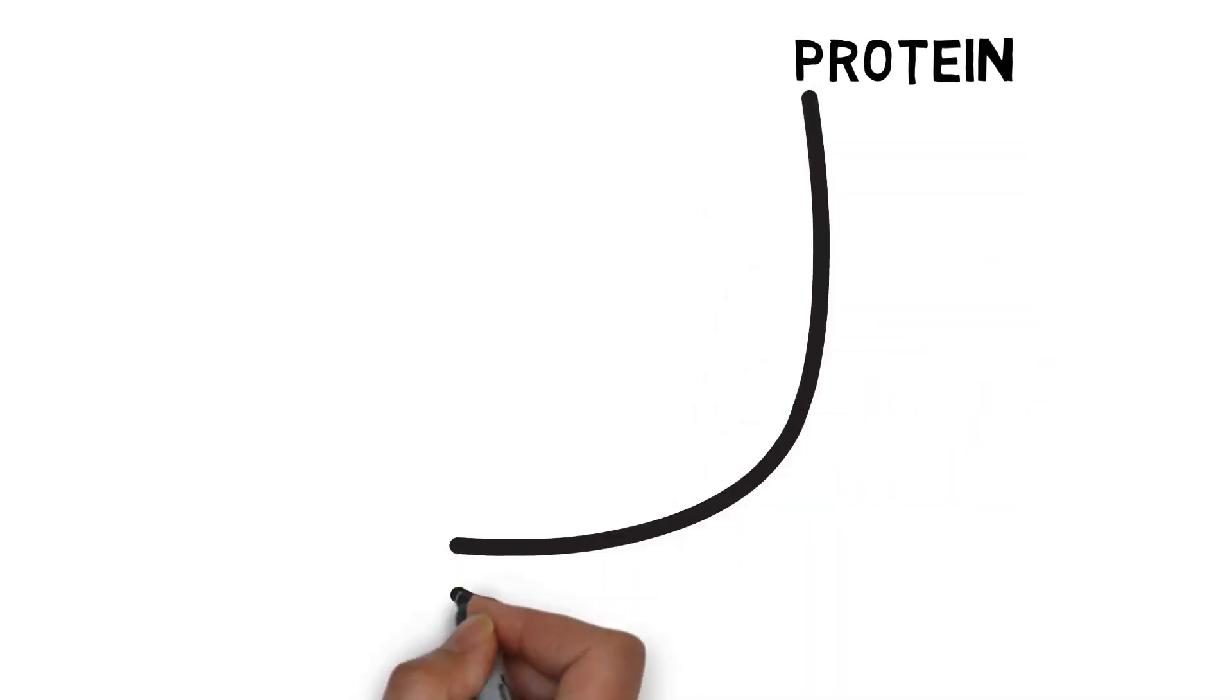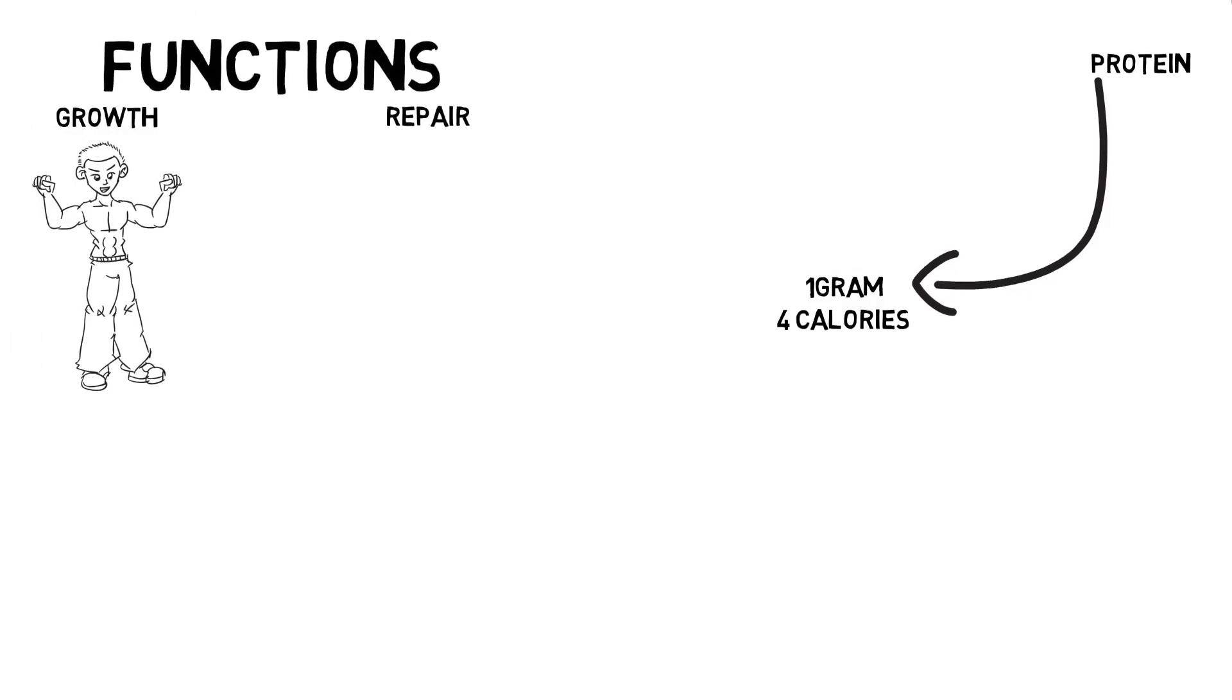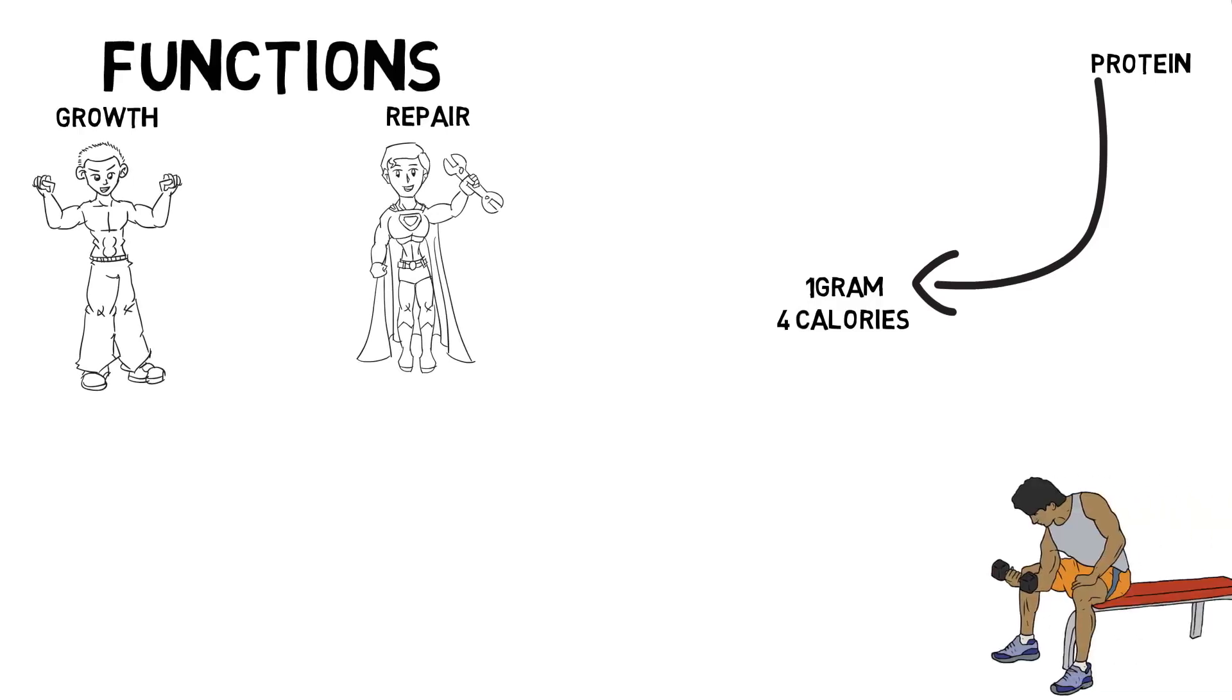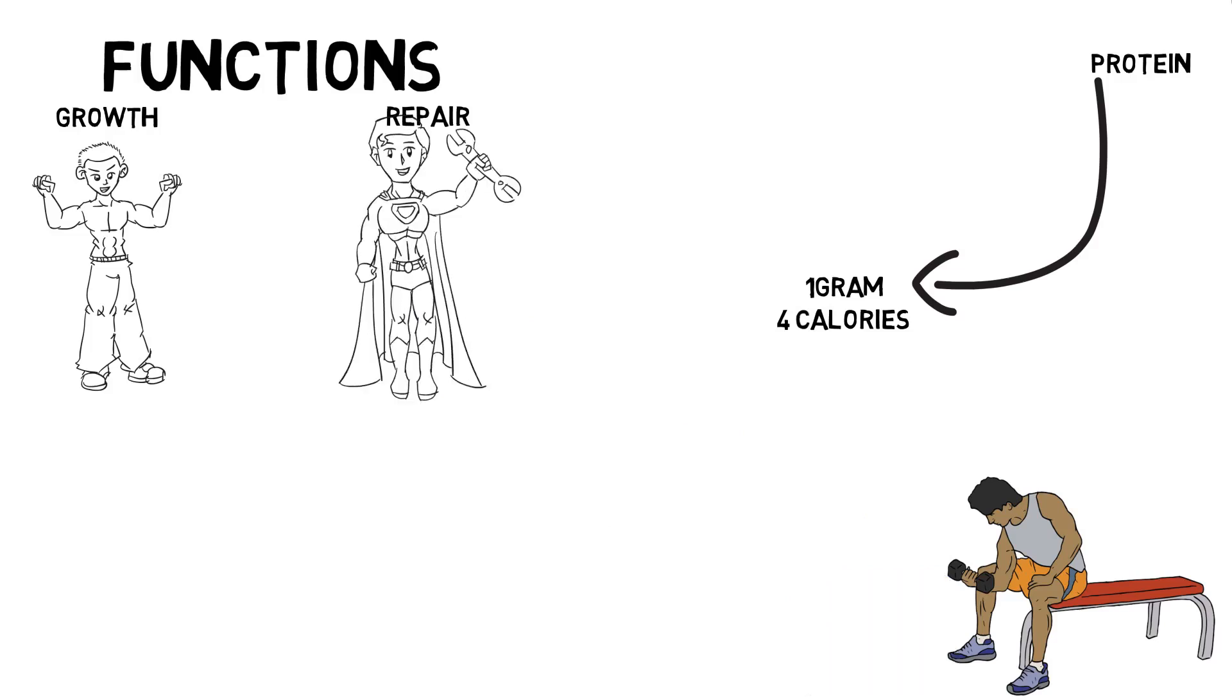Let's take a look at protein first. Keep this in mind that per one gram of protein you have there are four calories. So its main functions are growth and repair. Let's look at an example when we're in a gym doing an intense workout with weights. After that hard workout, if we consume protein it will help repair and rebuild those muscles.